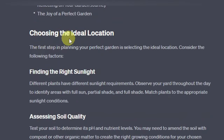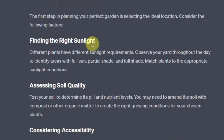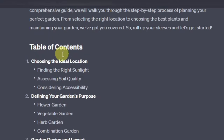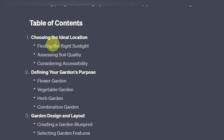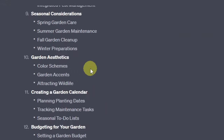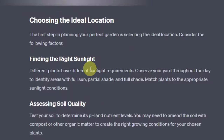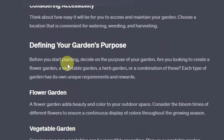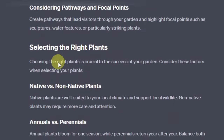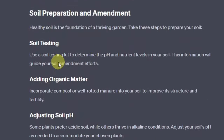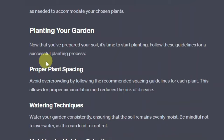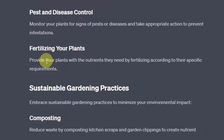So we have the first section, choosing the ideal location, then finding the right sunlight. As you can see, it's written content for every section in the table of contents — assessing soil quality, considering accessibility, all of that is here. This is actually a much longer content compared to the other prompt.